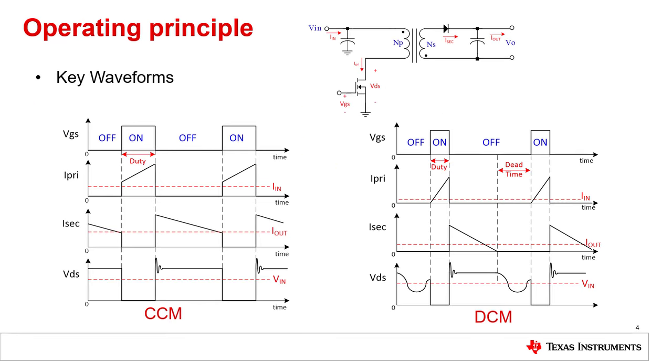Let's have a look how the flyback converter operates. Like with every basic topology, we have two operating modes that are dependent on the current in the magnetic component. In continuous conduction mode, or CCM, the current in the transformer is during the whole switching cycle positive and never gets to zero. In discontinuous conduction mode, or DCM, the current in the transformer gets in every switching cycle to zero and stays there for a while.